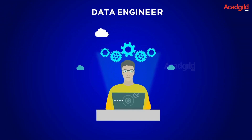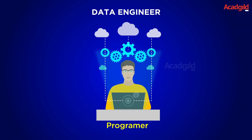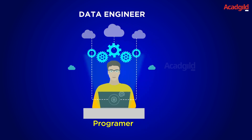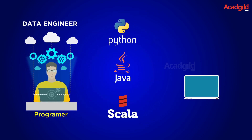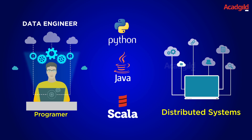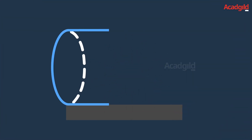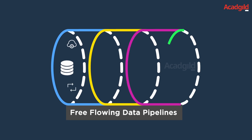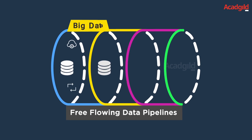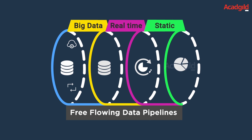The data engineer, on the other hand, is most likely a programmer from the past. He is proficient at Python, Java, or Scala, and adept at handling distributed systems for the analysis of voluminous big data. His primary responsibility is creating free-flowing data pipelines using various big data technologies for real-time or static data analytics.